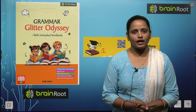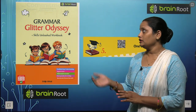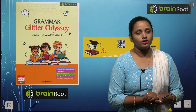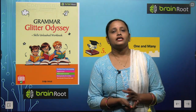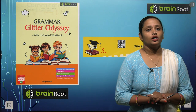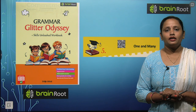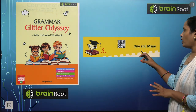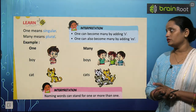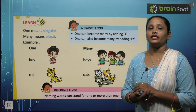Hello my dear kids, welcome back. I am Vandana and we are learning grammar — English grammar by Brain Root series. Here is a book called Grammar Glitter Odyssey, and today this is book one. We are going to do chapter number five, and the name of the chapter is 'One and Many.' Here we will learn about a few nouns or naming words and their numbers.